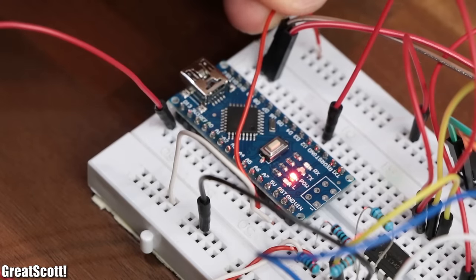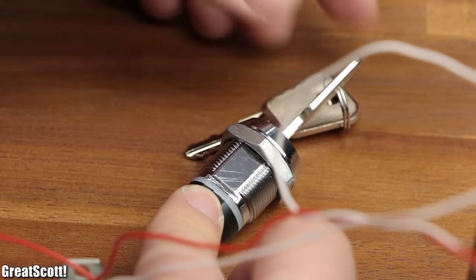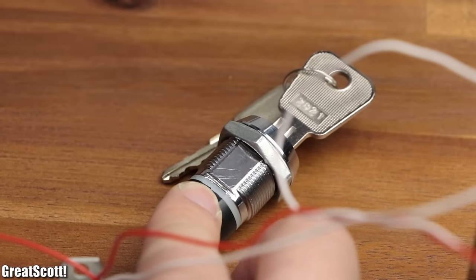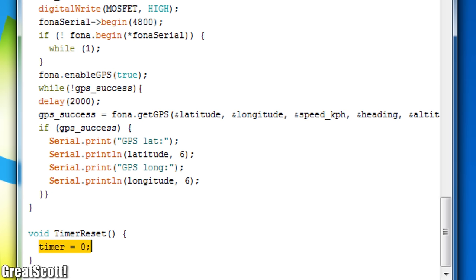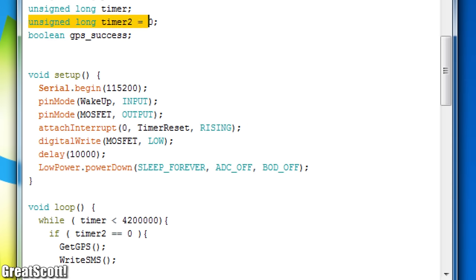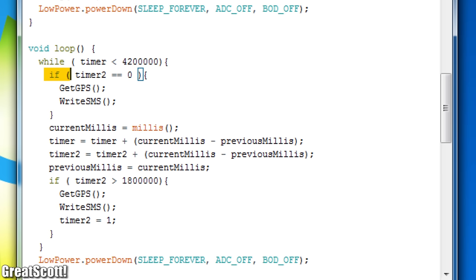Let's try to summarize the code. After the power up through the key switch, the microcontroller enters sleep mode after a 10 second delay. Once a shock occurs, the microcontroller wakes up, resets the timer and since timer 2 was 0 to begin with, it starts with getting the GPS location and sending it. Afterwards, both timers count up through the millis function.